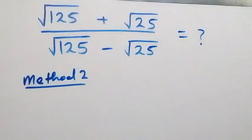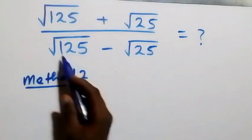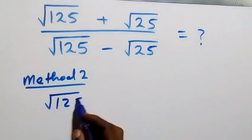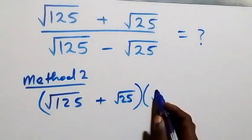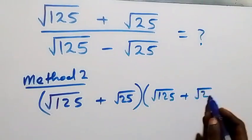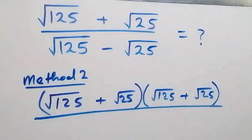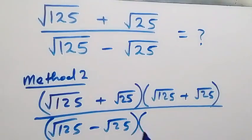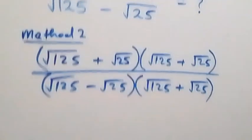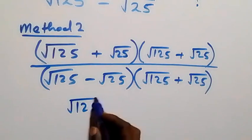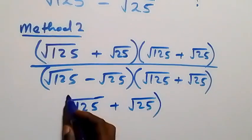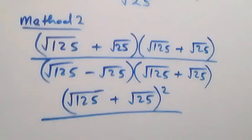Using the second method, we rationalize directly and multiply with the conjugate of the denominator. The numerator becomes (root 125 plus root 25) multiplied by (root 125 plus root 25). The denominator is (root 125 minus root 25) multiplied by (root 125 plus root 25).